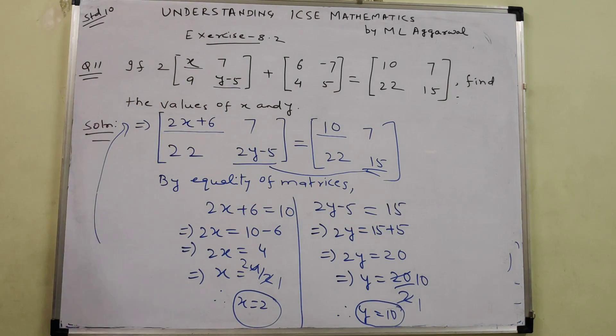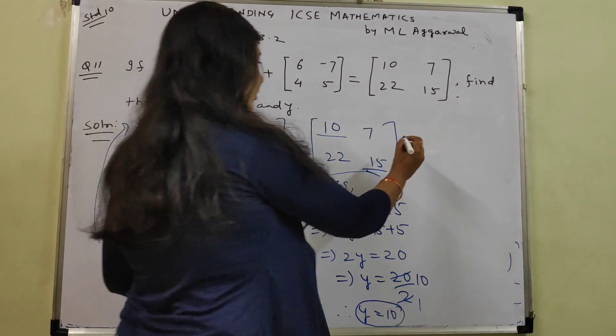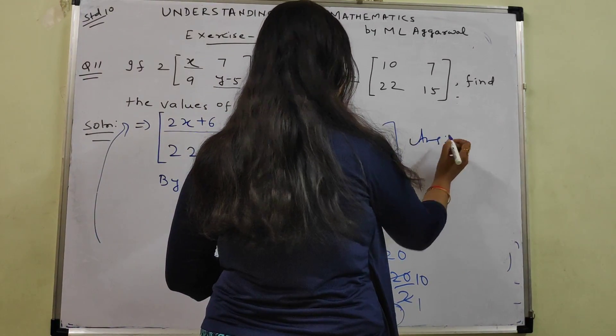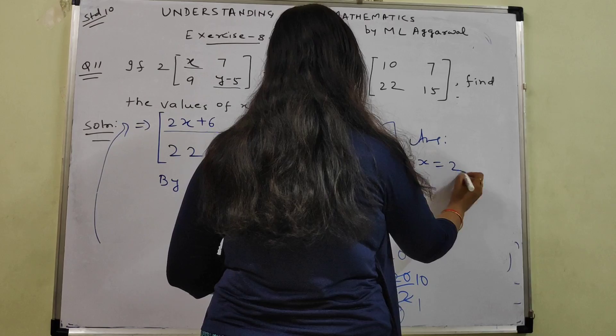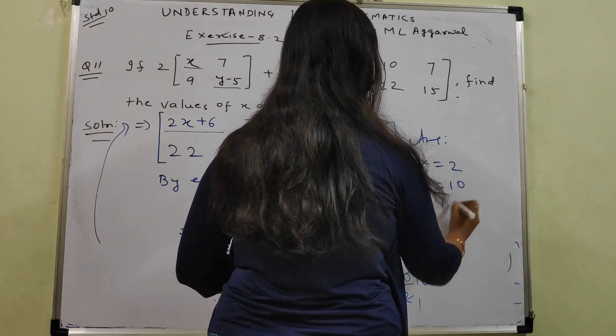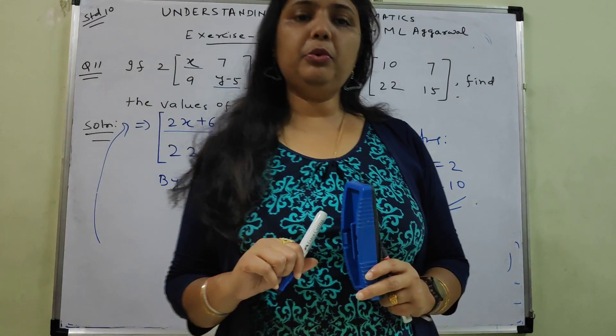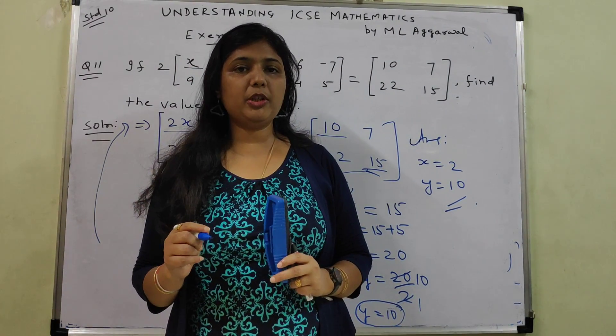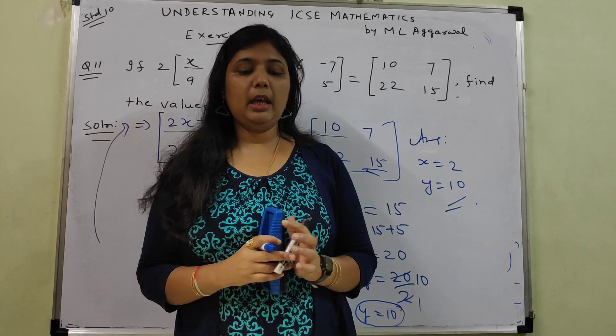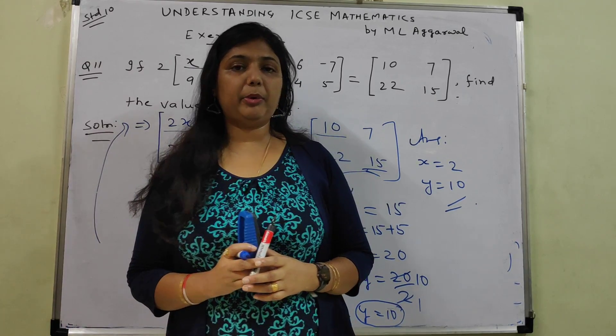So X is equal to 2, and Y is equal to 10. Final answer we can summarize: X is equal to 2 and Y is equal to 10. This is all about question number 11, exercise 8.2. I will be back with question number 12. Please keep watching, keep sharing, and subscribe. Thank you very much.